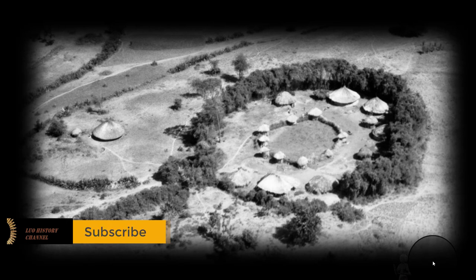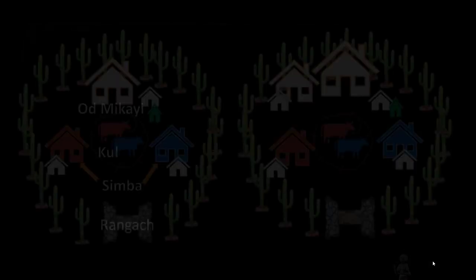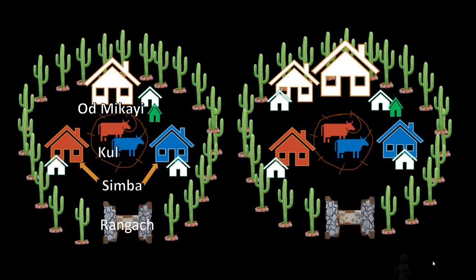We now take you to a Luo homestead fenced using a live fence. You get an aerial view of a home with several houses, and you can see granaries surrounding the Kul — where the cattle were kept. A young man recently moved out of his parents' home and built himself a home with a kitchenette. This pattern continues; the more homes are built, the more you see this self-identical pattern.